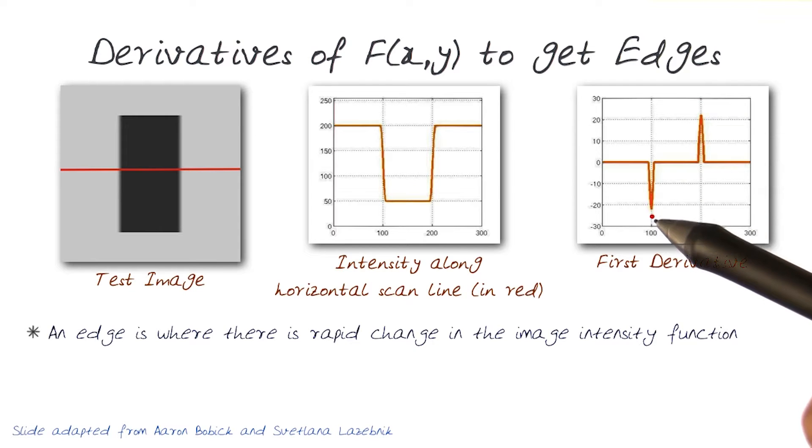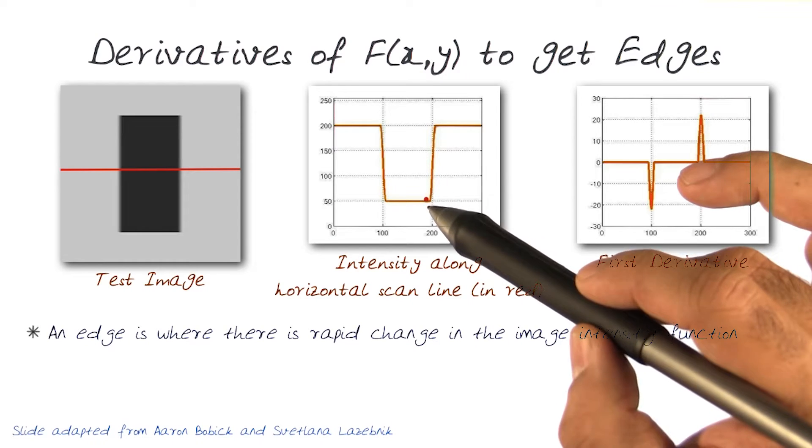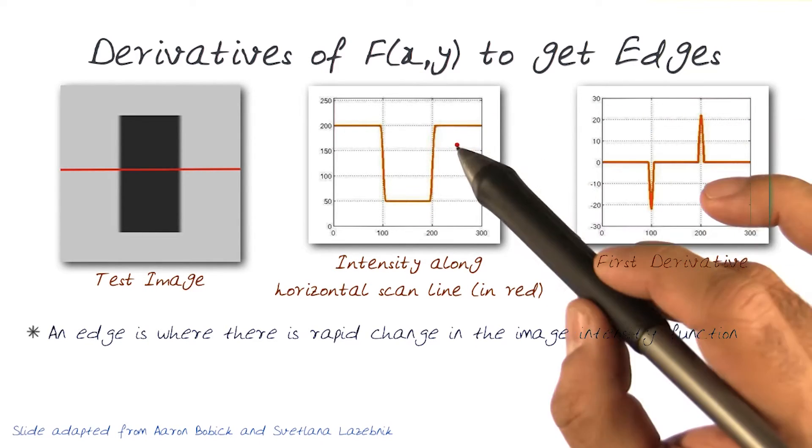So when you notice here, it goes to a larger number, goes back to zero. Similarly, when we come back here, it's this way. And again, the slope changes, and of this line, again, comes back to zero.